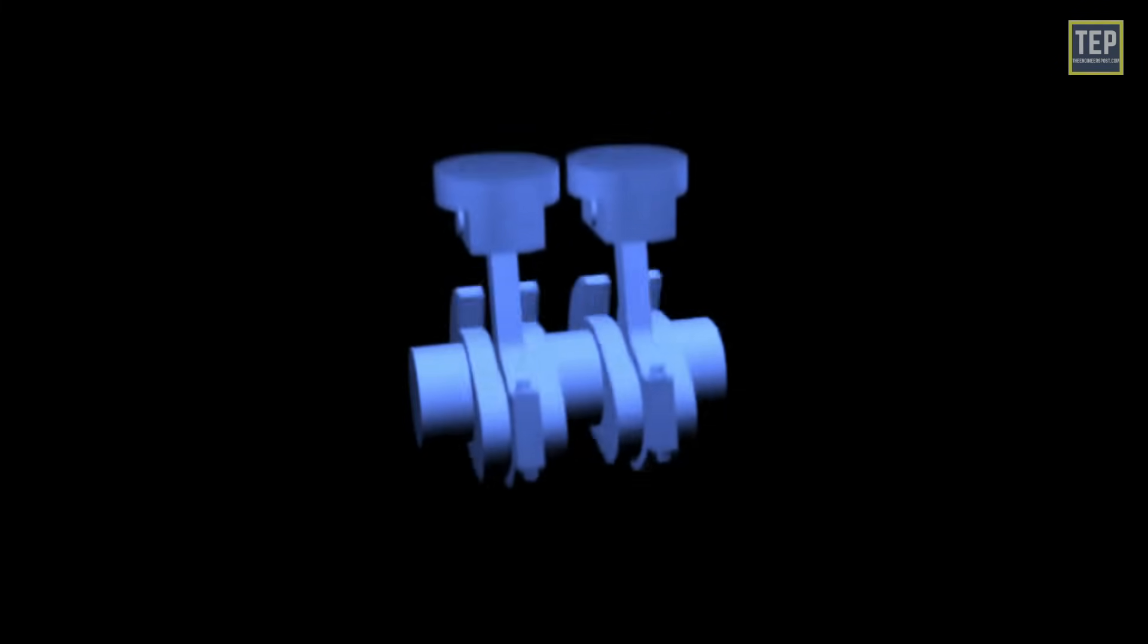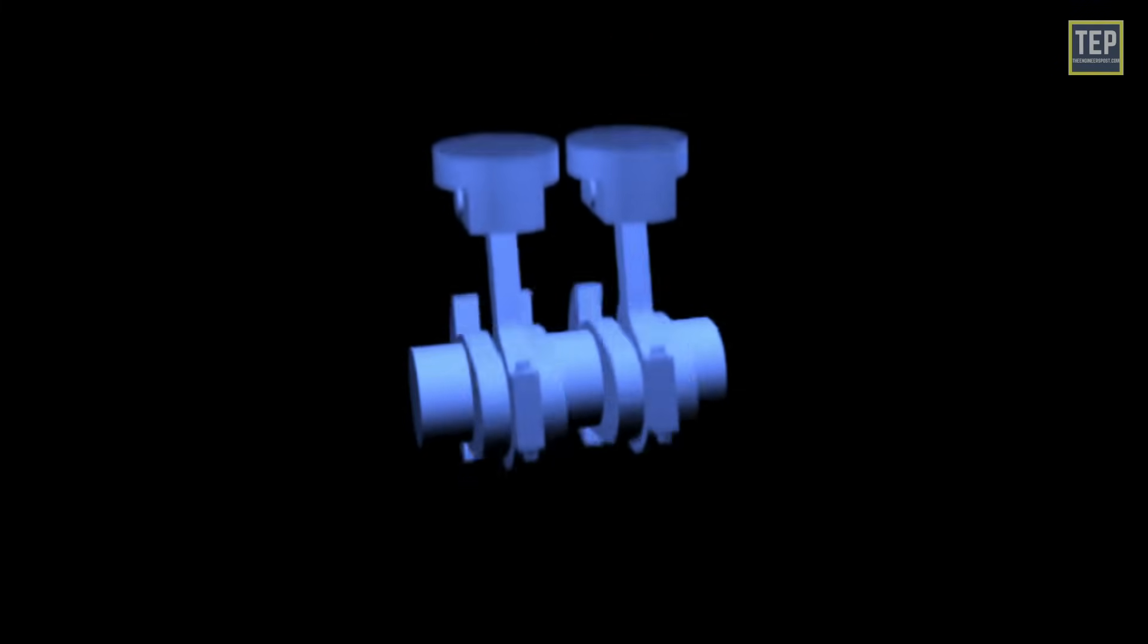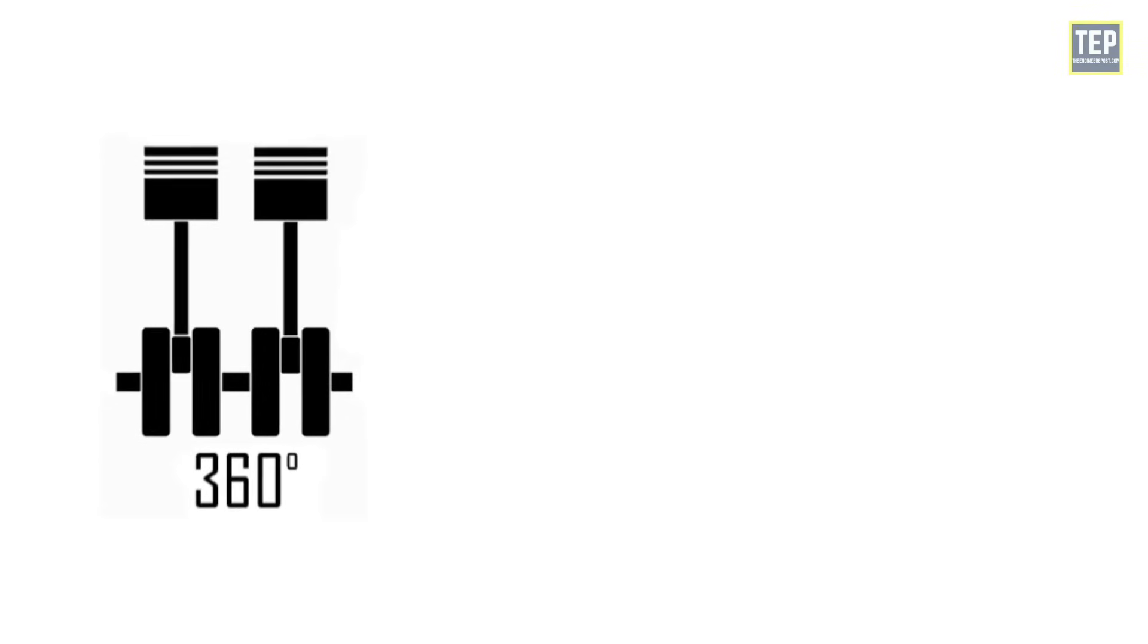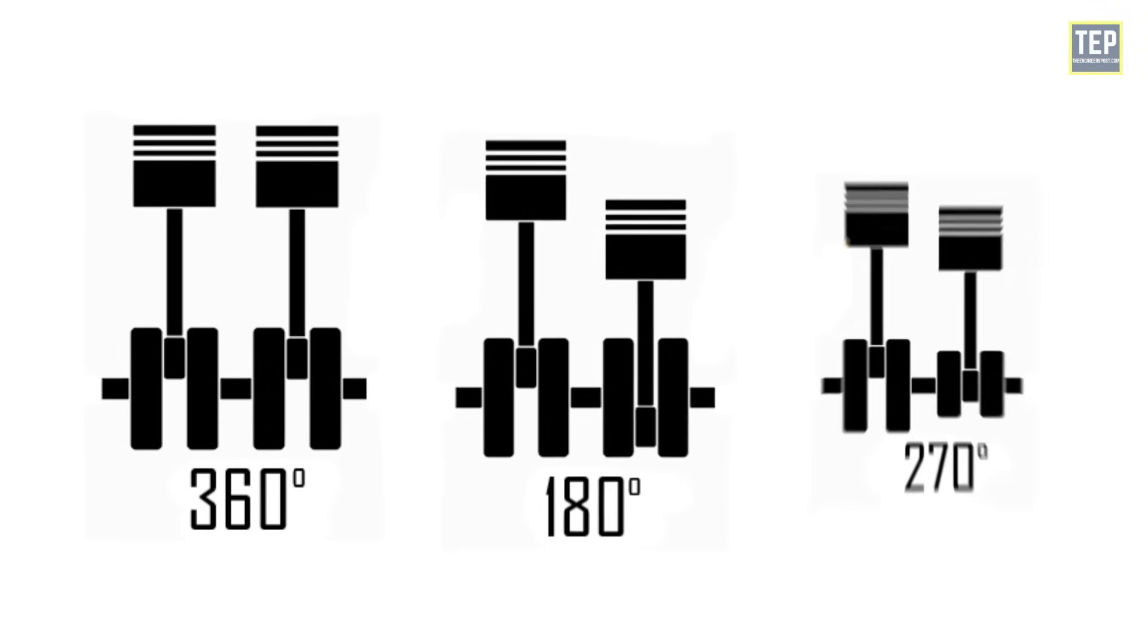Various crankshaft configurations have been used for straight twin engines, the most common being 360 degrees, 180 degrees, and 270 degrees.